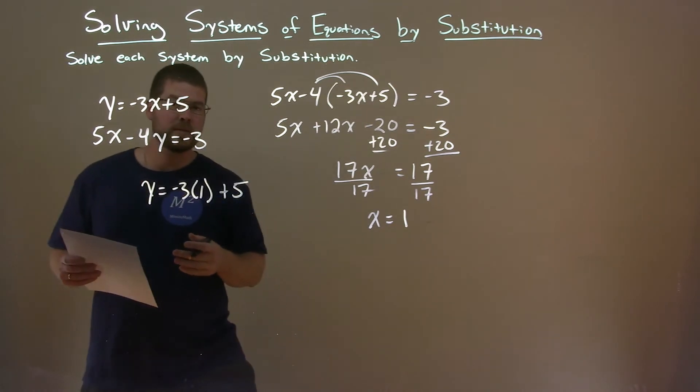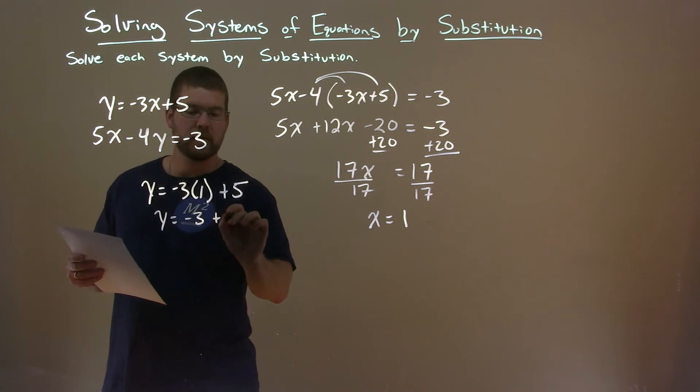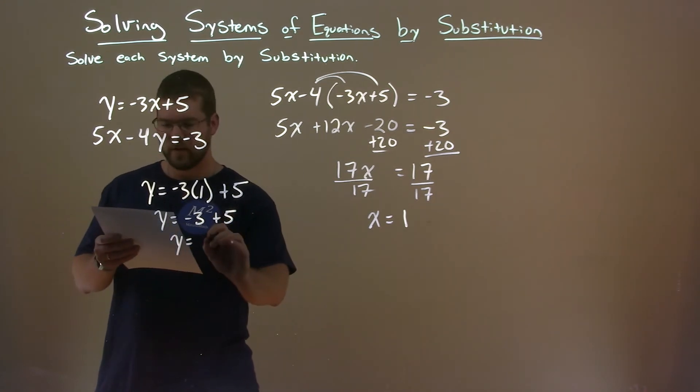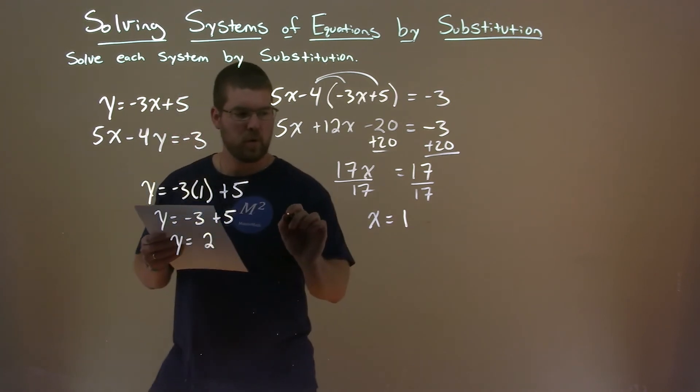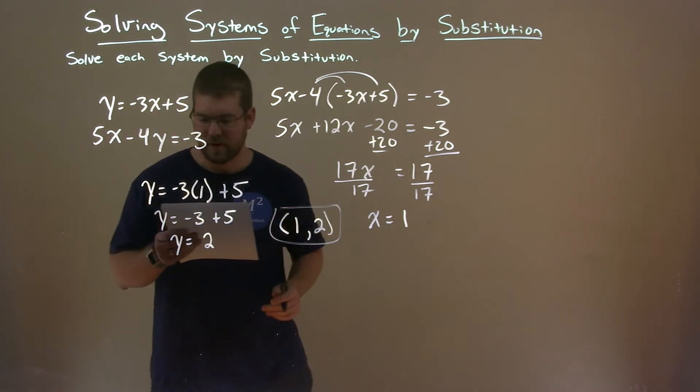From there, we need to simplify. So y equals minus 3 times 1 is minus 3 plus 5. And minus 3 plus 5 is a positive 2. So our coordinate point here is 1, 2. And that is our final answer.